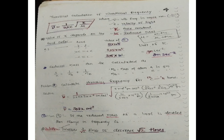Now we discuss the theoretical calculation of vibrational frequencies. The formula is: nu-bar equals 1 over 2πc times the square root of k over mu, where nu-bar is the vibrational frequency in wavenumber, c is the velocity of light, k is the force constant, and mu is the reduced mass. The value of k depends on bond order: for C–C single bond, k is 5×10⁵; for C=C double bond, k is multiplied by 2; and for C≡C triple bond, k is multiplied by 3.